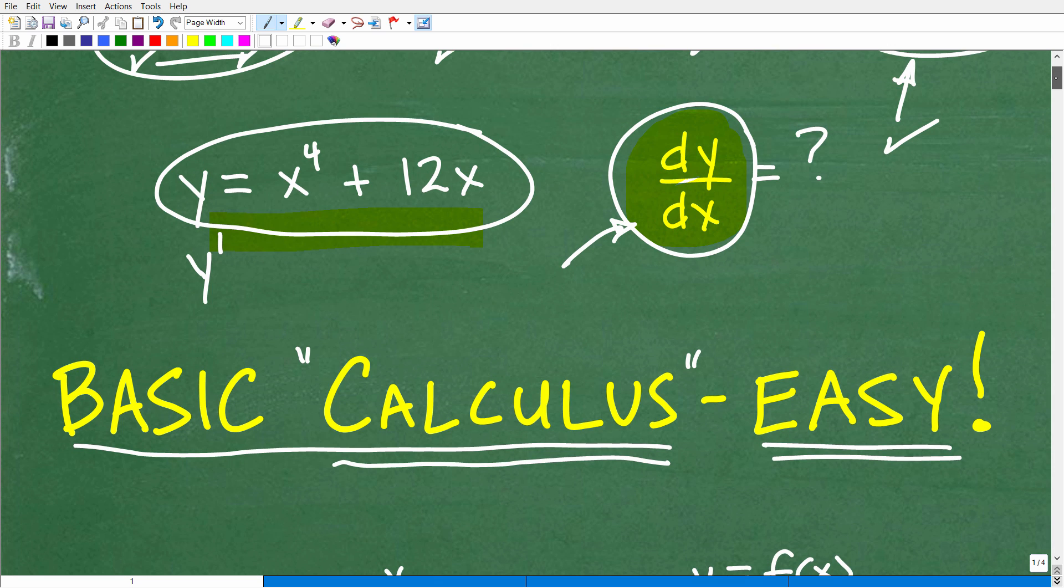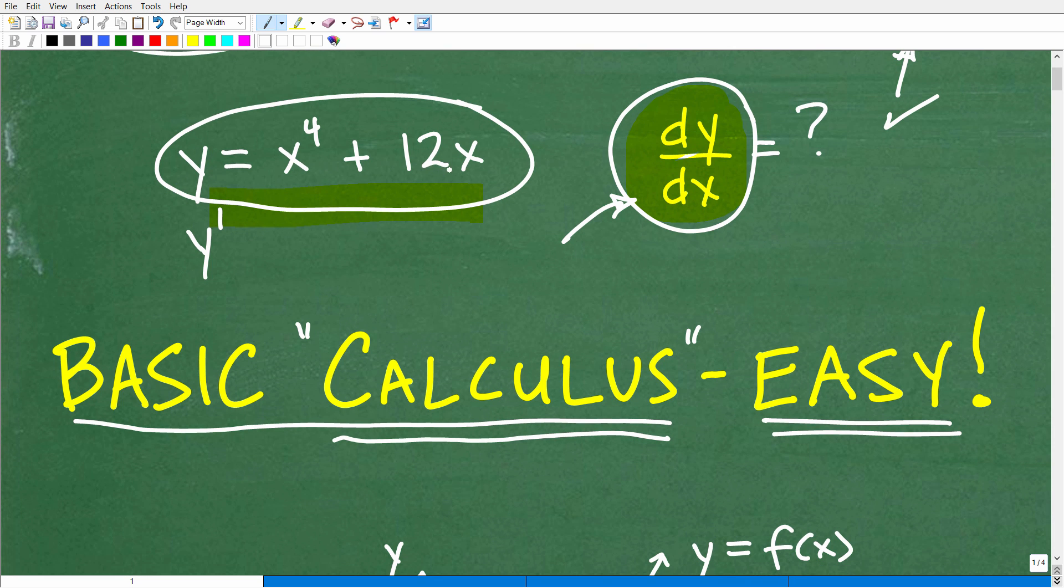So we have this equation, this y equals x to the fourth plus 12x. Now, with this equation, and by the way, I'm very informally talking about the first derivative. So those of you out there that maybe are a PhD in mathematics and you teach calculus at a college level, obviously you would be teaching this in a more formal sense. I get that. I'm just trying to explain this so that any person can get a basic idea.